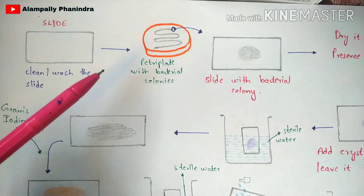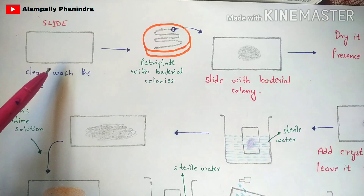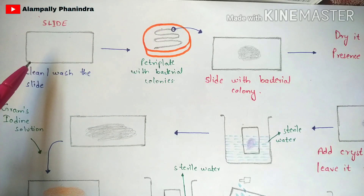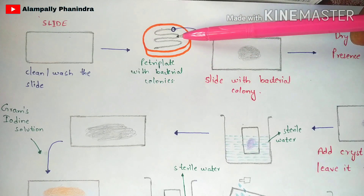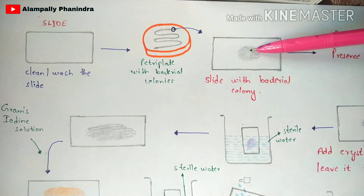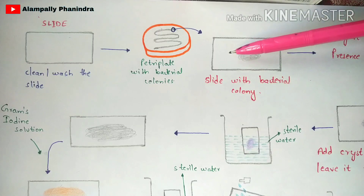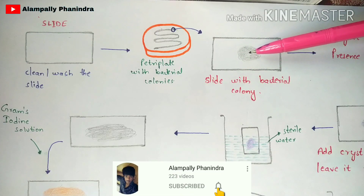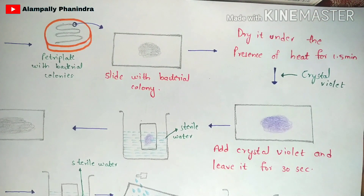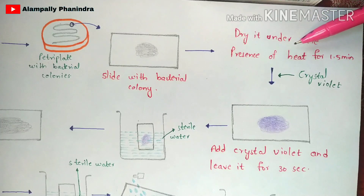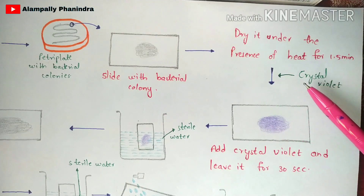The first step is to take a clean slide, washed with water to prevent contamination — the slide should be sterilized. Next, culture bacteria in a petri plate to form colonies, select one colony, place it on the slide, and spread it across a particular portion. Then dry the slide under heat for 1.5 minutes (1 minute 30 seconds). After drying, add crystal violet to the slide.